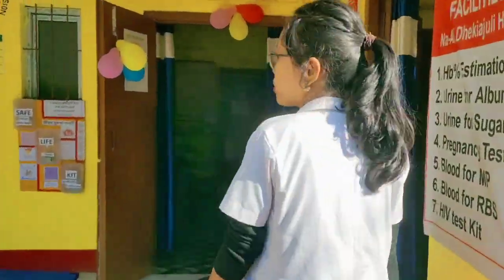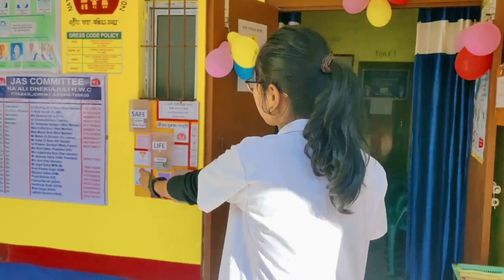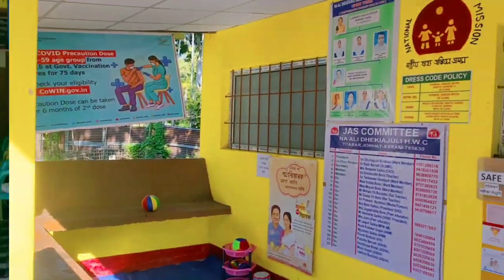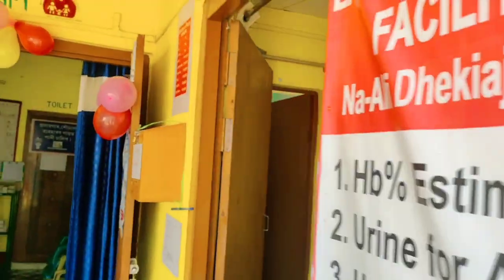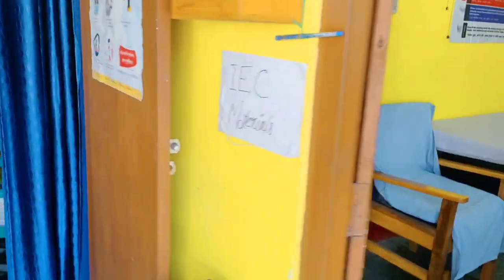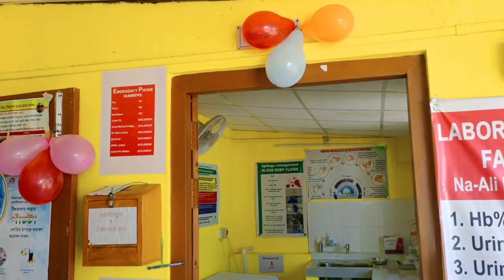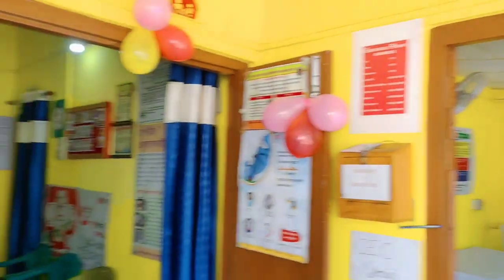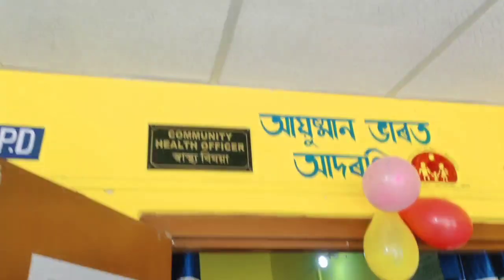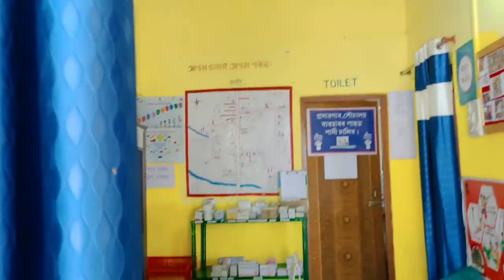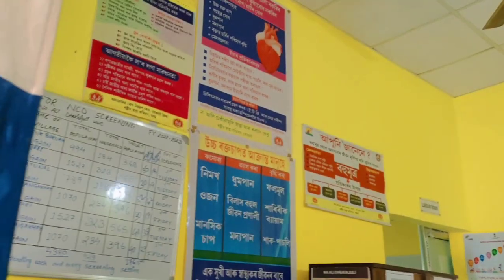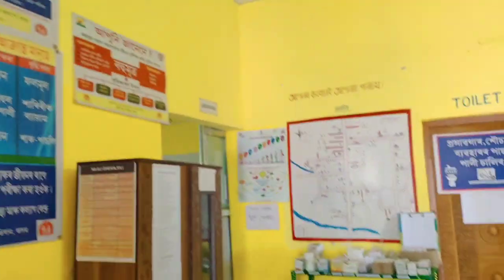Here you can see the logo and IEC materials. This is the IEC material corner, and I have put a suggestion box here. After entering, the first cubicle is mine — the CHO cubicle — and you can see lots of IEC materials here.